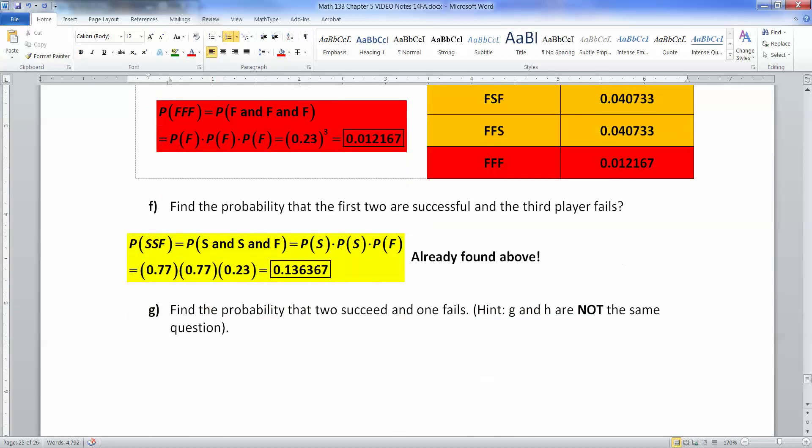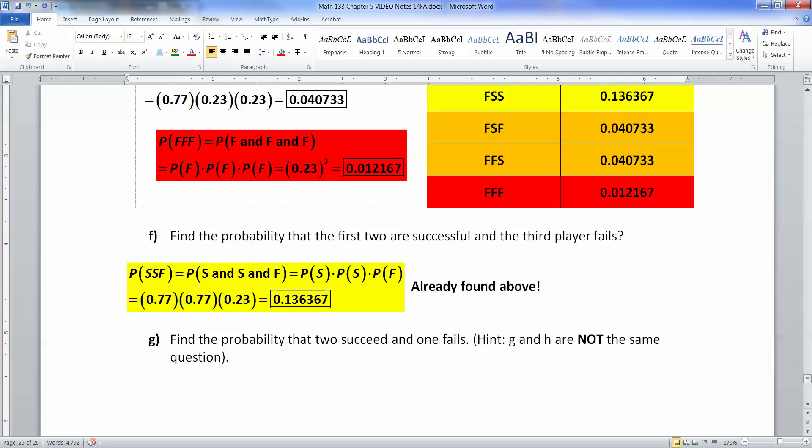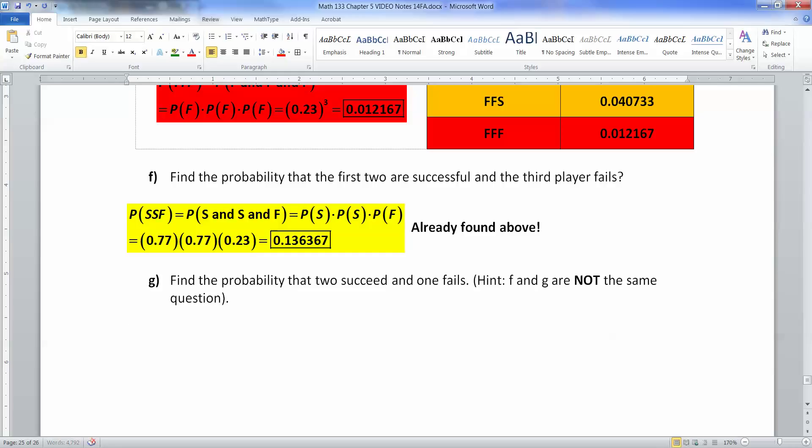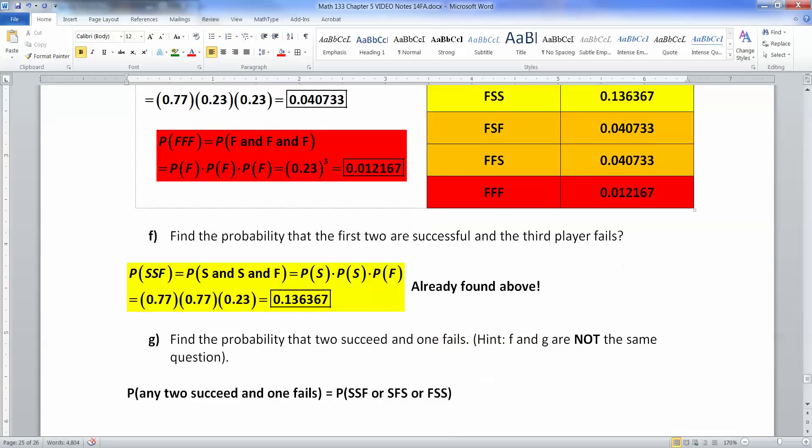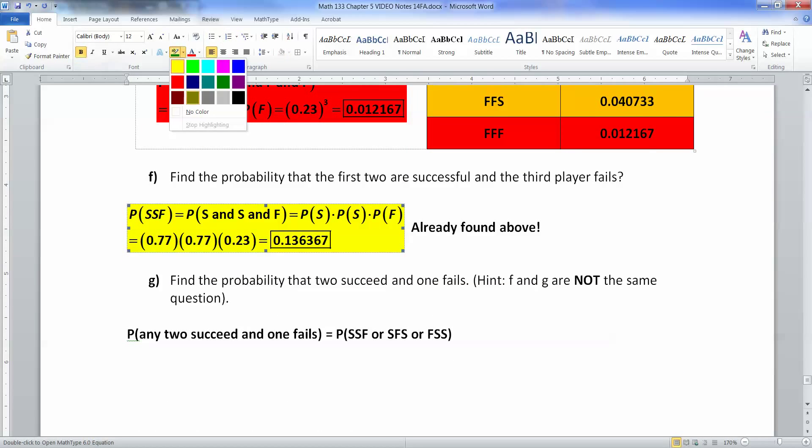Okay. Now we're going to find the probability that two succeed and one fails. And notice these are not the same question. F and G are not the same. Now what's the difference? Well, because F is talking about the first two succeed, the third player fails. G is talking about any two of them succeed. So this is the probability that any two succeed and one fails. So that means that you're really finding the probability of several things. You can say that's SSF or SFS or FSS, right? Because that'll give you two successes and one failure. In other words, I'm trying to add up all my yellow ones, right? Instead of just one yellow one, I want all of them.